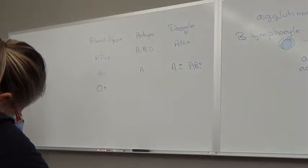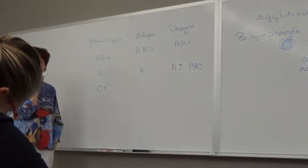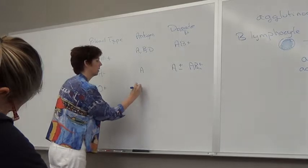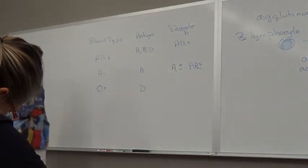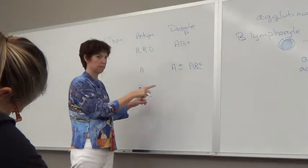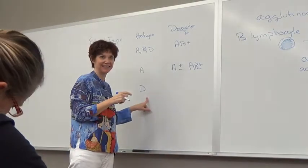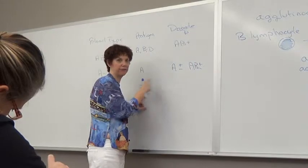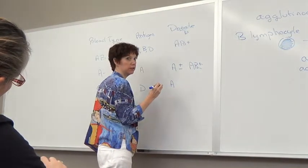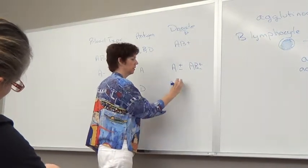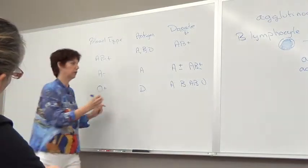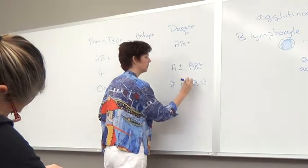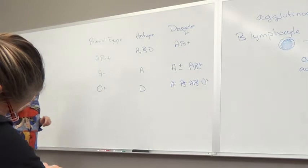What antigens does O positive have? D. So can we give O to A? Yes, because there's no antigen to have antibodies against. Remember O is our universal donor. Positive or negative? Positive. O positive can donate to positive blood types only.